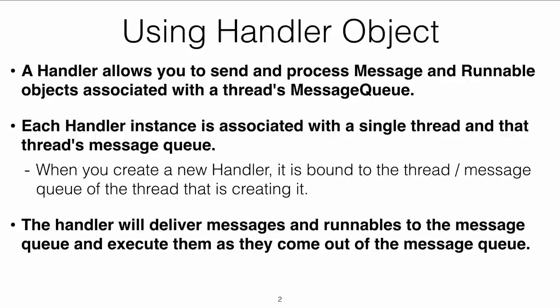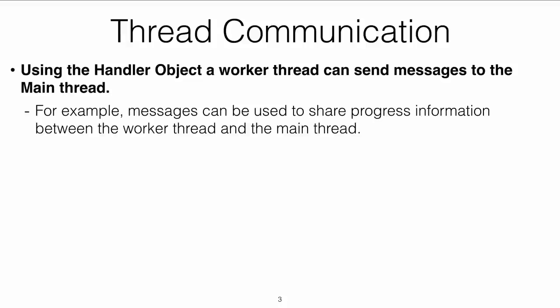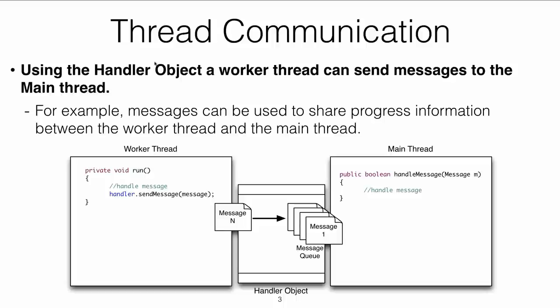The handler object is a mechanism — it's like the child thread has access to the mailbox of the main thread. The child thread uses it to share progress and send back results to the main thread. The architecture is simple: there is a worker thread running something, it holds a reference to the handler instance created in the main thread, and then it calls the handler's send message method. The message will be deposited into the queue.